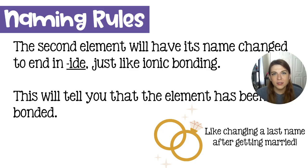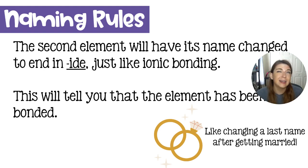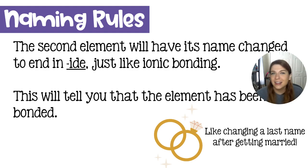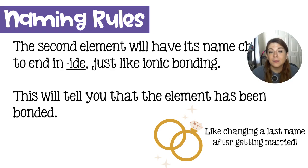We're talking specifically about naming binary covalent compounds, meaning compounds that have just two elements. There are more naming rules for organic compounds, but for now we're just talking about inorganic binary compounds. The second element, just like in ionic bonding, is going to have its ending changed to '-ide.' Think of carbon dioxide, nitrogen trihydride, dihydrogen monoxide — the '-ide' ending tells you this element is bonded.